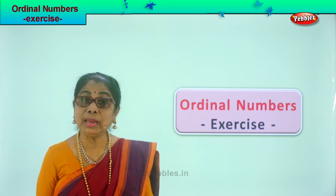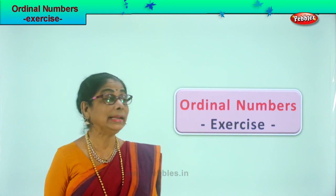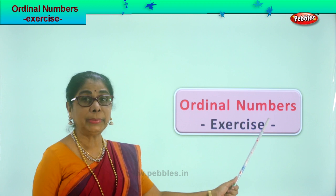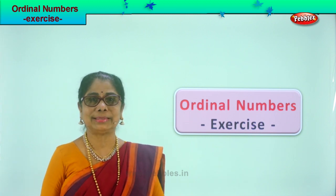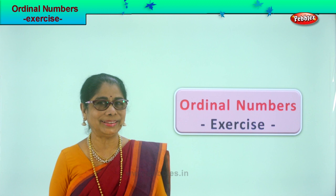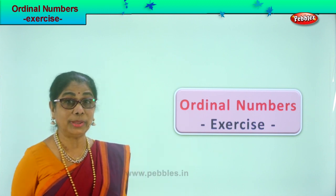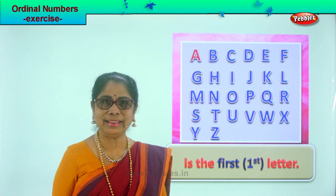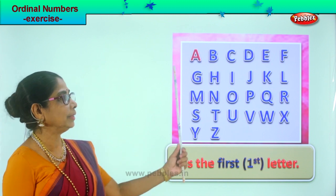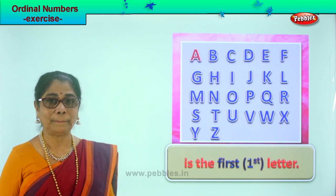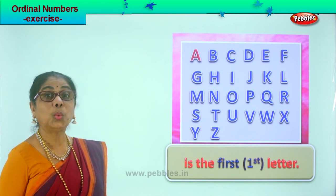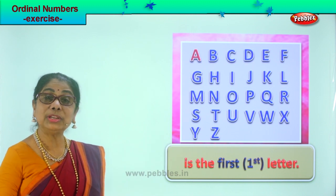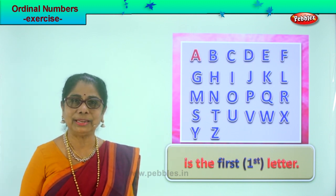Hi children, we learned ordinal numbers. Now to remember the ordinal numbers, let's do a few exercises. Look at what you have here — from A to Z. You must know where each letter is. Now look at this letter A. Is it first, or last, or second, or fifth, or tenth, or twentieth?